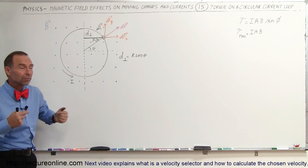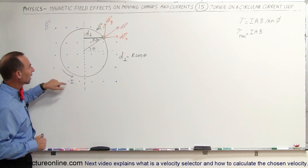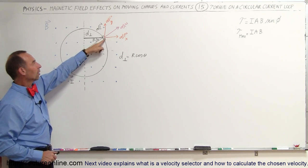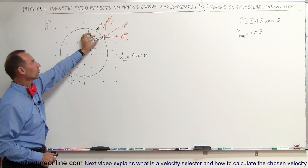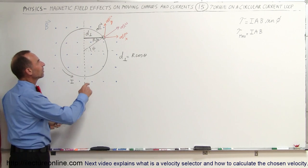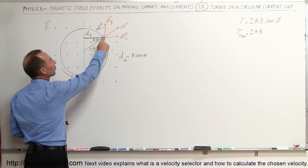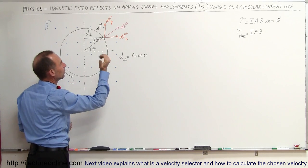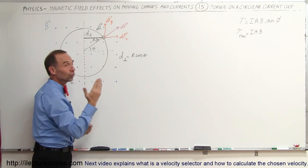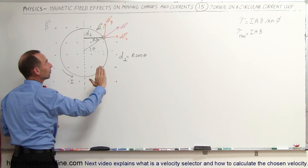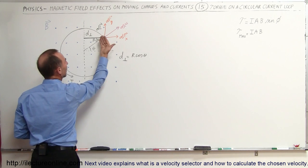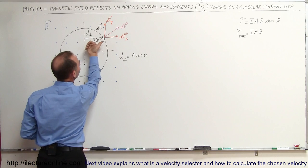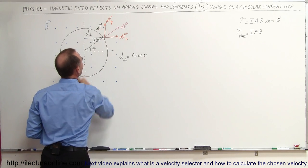Does it matter on the shape of the loop? So here we have a current-carrying loop. The current is going in this direction. We took an arbitrary segment on the loop, a small little dl, and we found the force on that small little dl based upon the magnetic field coming out of the board and the current going in this direction. So take your right-hand rule: take your fingers in the direction of the current, turn your hand around so you can point your fingers in the direction of the magnetic field, and then the thumb points in the direction of the force.